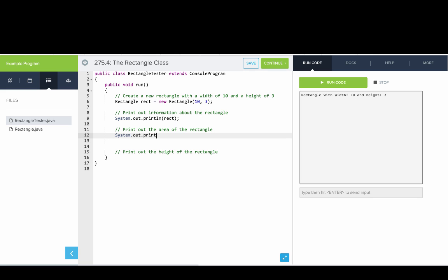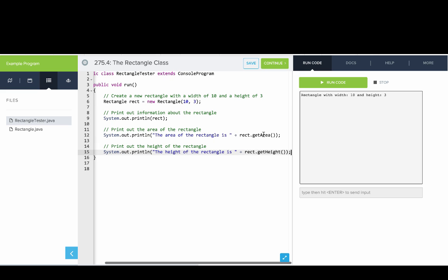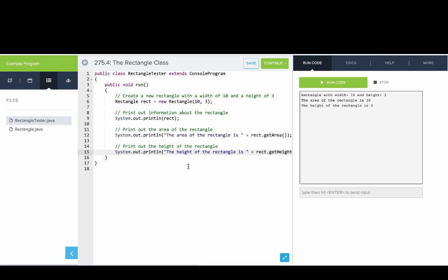Then I'll try saying the area of the rectangle is plus rect dot get area. And print line, the height of the rectangle is rect dot get height. So I'll run that. And you can see we have a program that tells us some things about the rectangle. Now we'll dive in a lot more into how this is working, but just wanted to show you a full working program.